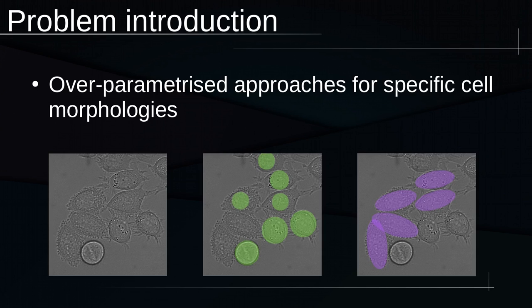Moreover, a lot of approaches are over-parameterized to one cell type, so an approach that is good at finding circular cells is not good at ellipsoid cells and vice versa.